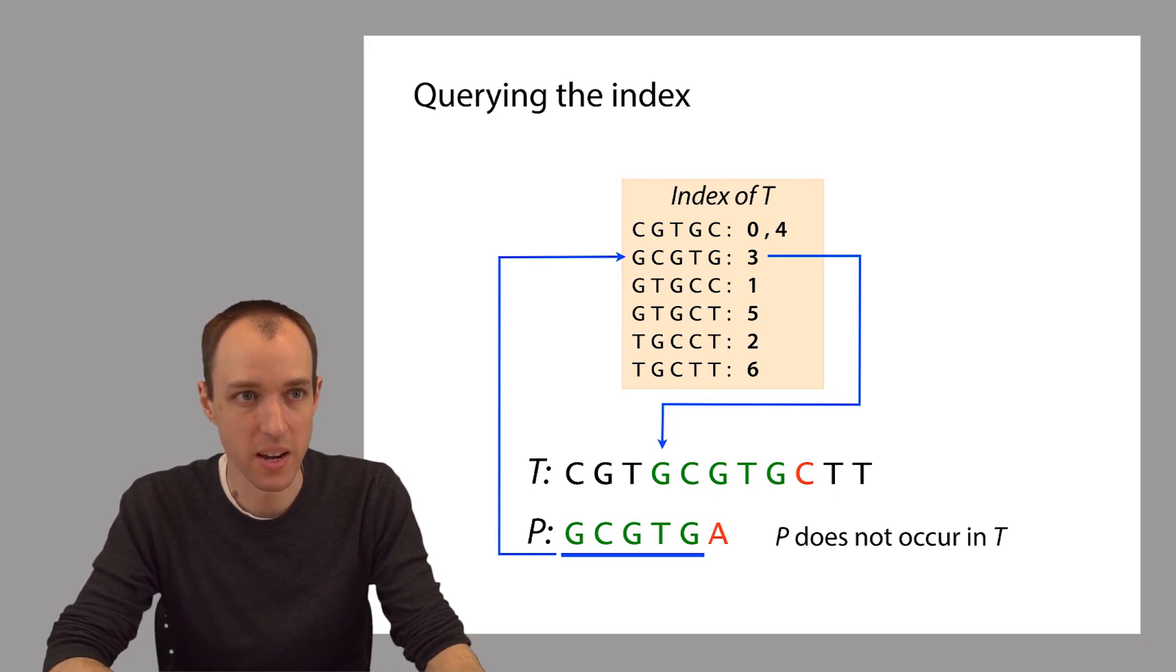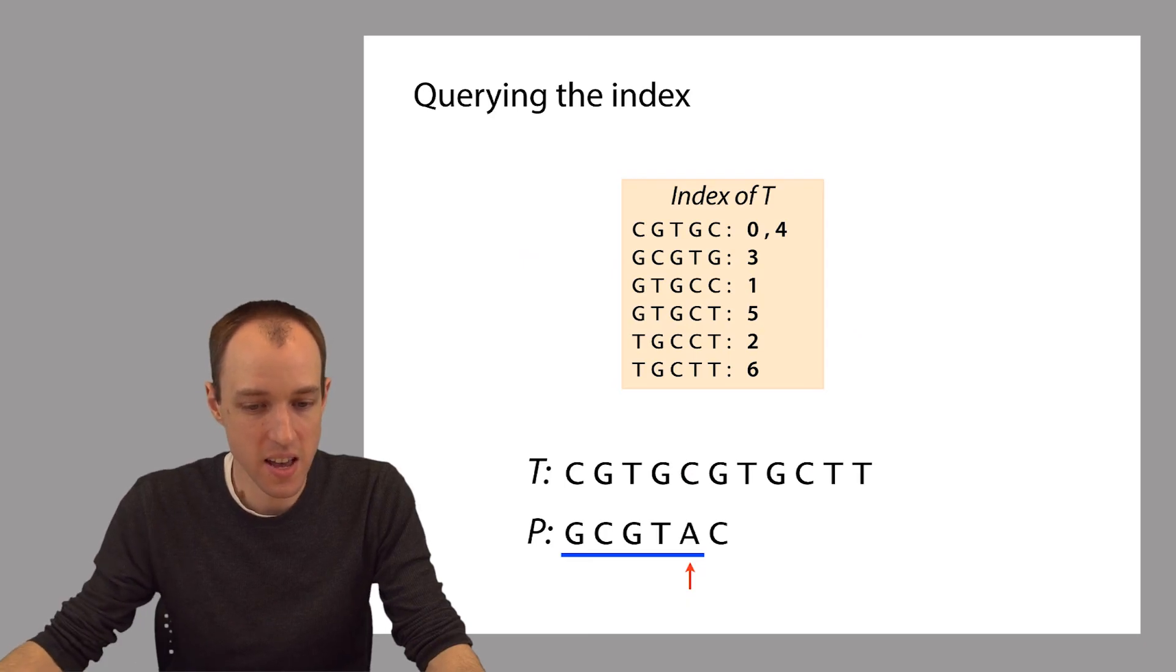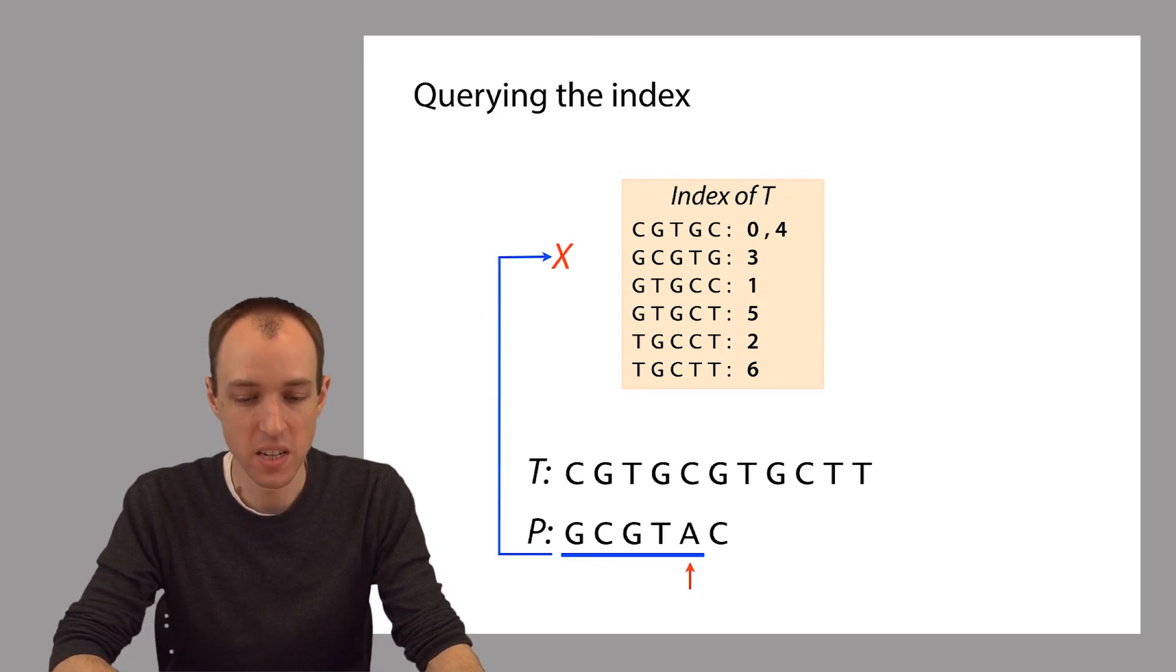Now here's another modified example. This time, we modified this character right here to be an A. That's the change we made. So again, the pattern does not occur in the text T. And in fact, in this case, we can give up even faster. We notice this even sooner. Because in this case, the first 5-mer that we take from P doesn't even occur in the index at all. So if a substring of length 5 from our query string P doesn't occur in the text at all, then the full string can't possibly occur either. So we can give up at that point.